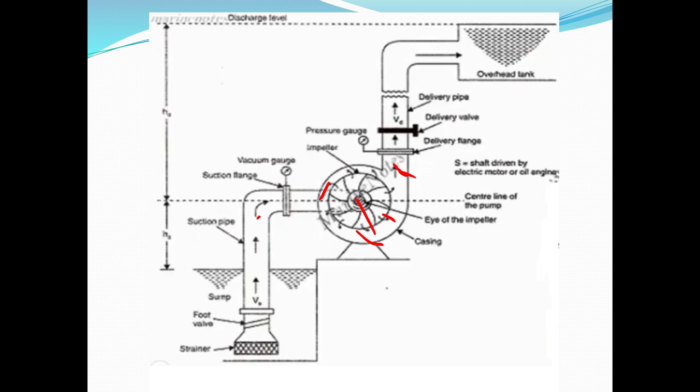Here is the water outlet and the delivery pipe — it is possible to take the water to the overhead tank. If we have liquid here, we will push the liquid. Putting liquid here creates a vacuum. The vacuum is created and rotated, drawing more fluid in.